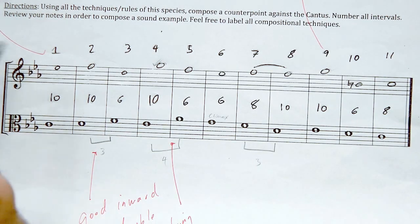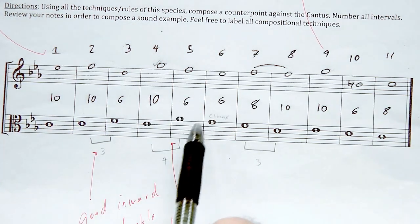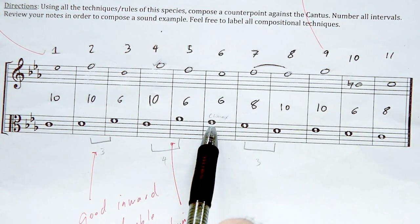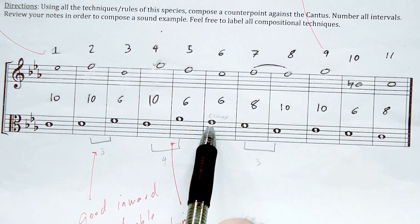In order to compose a good counterpoint above the cantus, you need to analyze the cantus that you're given. And I note that he labels measure 6 as the climactic moment in the cantus.